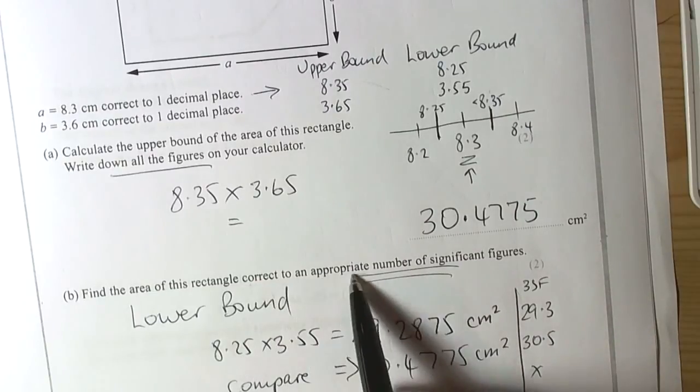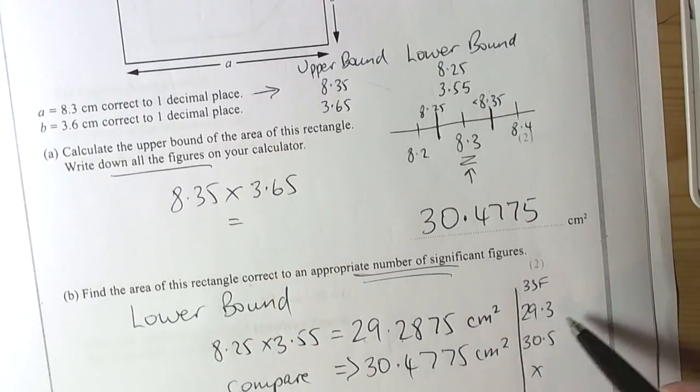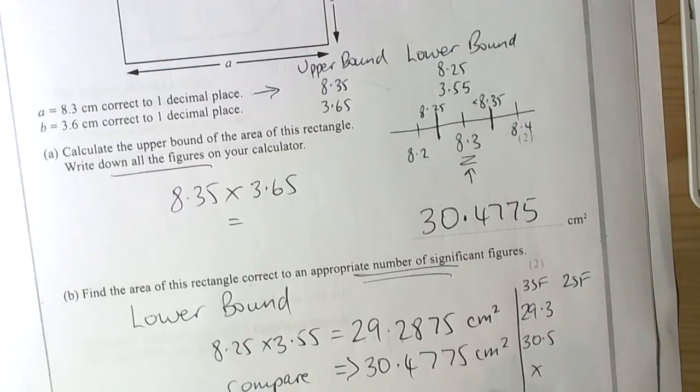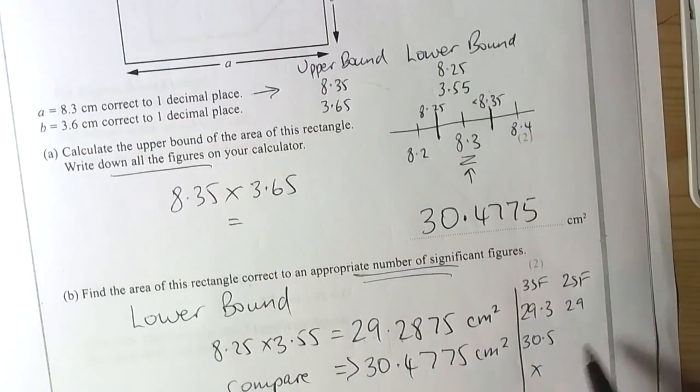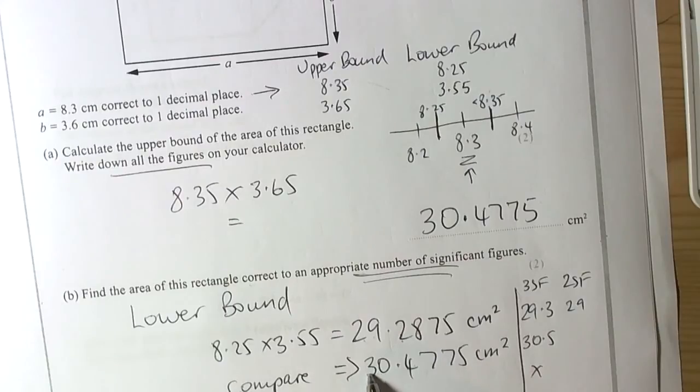Because it says correct to an appropriate number of significant figures, which means that we're looking for these two values to be the same. So then we do two significant figures. And for this question in here, two significant figures would be 1, 2. That 2 doesn't change that, so that would be 29. Two significant figures for this number, 1, 2. The 4 doesn't change the 0, so that would be 30. So they're not the same there either.